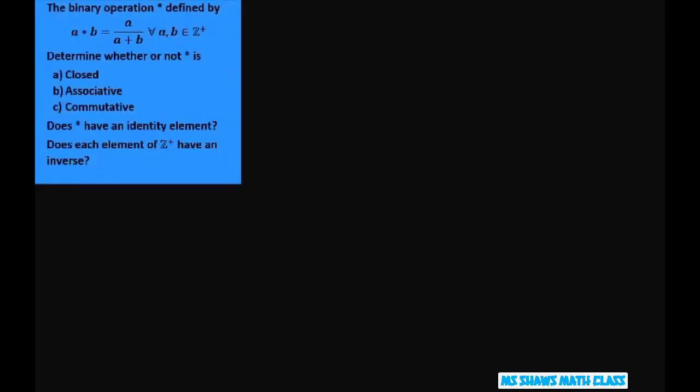So first, we'll just start with, is it closed? So if it's closed, it means it has to be a member of our integers. We can take, let's take example, we just have to show one example where it's not closed. So let's try 3 star 4. That gives us 3 divided by 3 plus 4, which equals 3 sevenths, which is not in the set of our positive integers, so not closed.